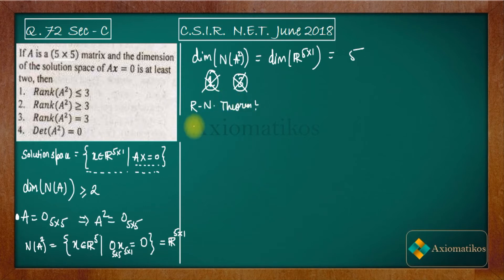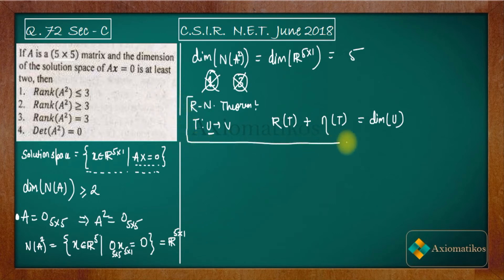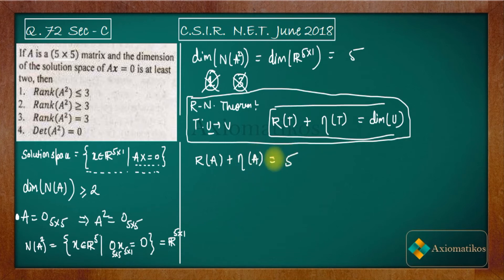The rank-nullity theorem states: if T is a transformation from U to V, and U is a finite-dimensional vector space, then rank(T) + nullity(T) = dim(U). Here, nullity is the dimension of the null space and rank is the dimension of the range space. Applying this to our problem: rank(A) + nullity(A) = 5, since A is a transformation from R⁵ to R⁵.